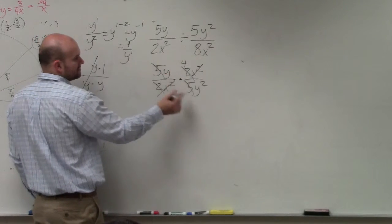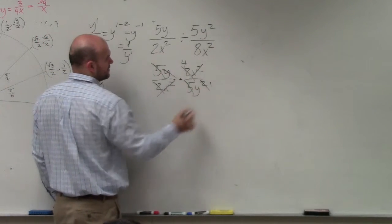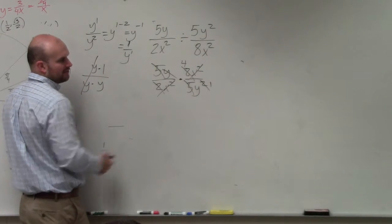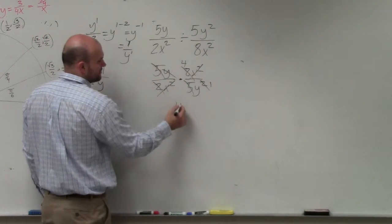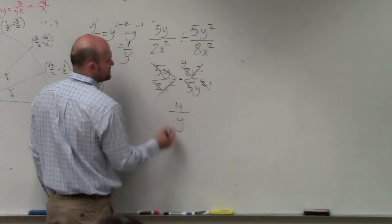So therefore, in the numerator, basically the y's divide out to y over 1, so in the numerator I'm left with 4 over y to the first power.